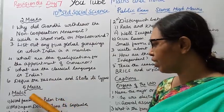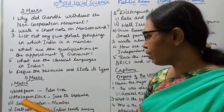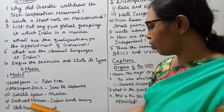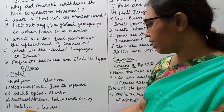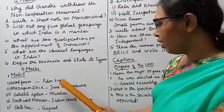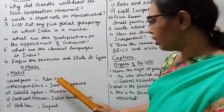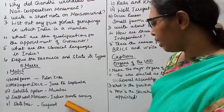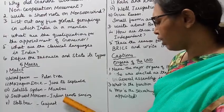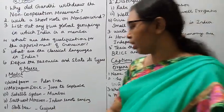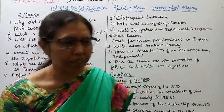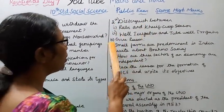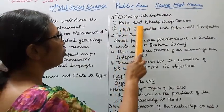Five marks — match: wind form, Mazagon Dock, satellite system, southwest monsoon, state tree palm tree. June to September, Mumbai, Indian Remote Sensing, Gujarat.